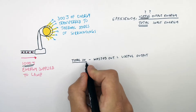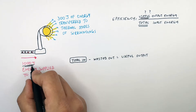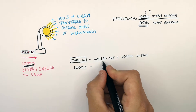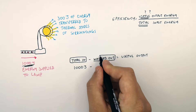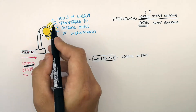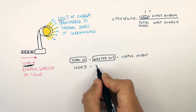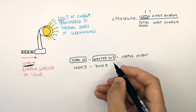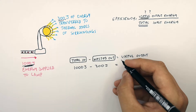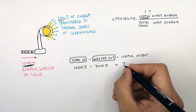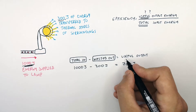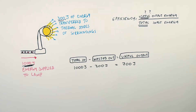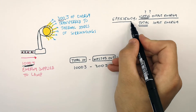The total input into the lamp is 1,000 joules, and you minus the 300 joules of wasted energy output. That gives you a useful output energy of 700 joules.